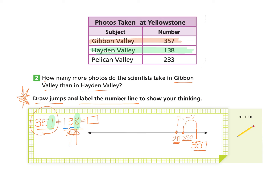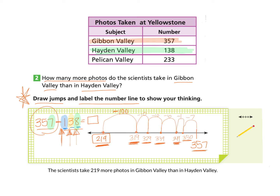Now I look at the tens column, which has three tens. I make three jumps of 10, taking away 10 each time from 349: landing at 339, then 329, then 319. The last step is to take away 100 — one big jump of minus 100 from 319 — landing at 219. So the scientists take 219 more photos in Gibbon Valley than in Hayden Valley.